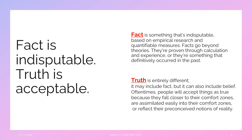Propositions are usually stated as short statements or sentences. So, when we say truth, truth is acceptable. Fact is indisputable — something that is indisputable based on empirical research and quantifiable measures. Facts go beyond theories; they have been proven true through calculation and experience, or are something that definitely occurred in the past.